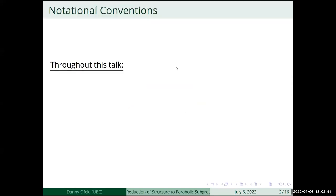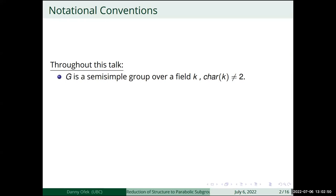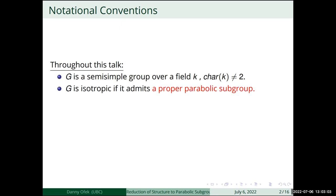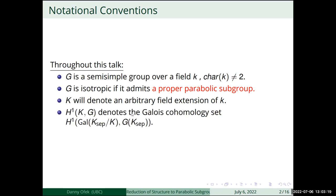Let's start, but first a little bit of notation. G is going to be a semi-simple group over a field of characteristic not two. Some of this stuff works for reductive groups, but almost all of our results are about semi-simple groups, so we'll just talk about semi-simple groups. G is called isotropic if it admits a proper parabolic subgroup. Capital K will denote an arbitrary field extension of small k, and H¹ denotes the Galois cohomology of our group G.